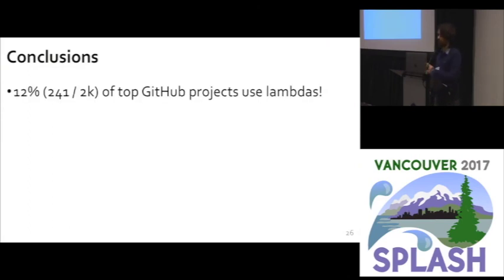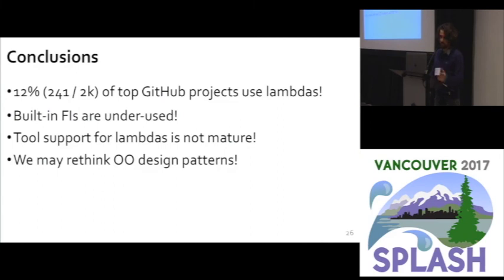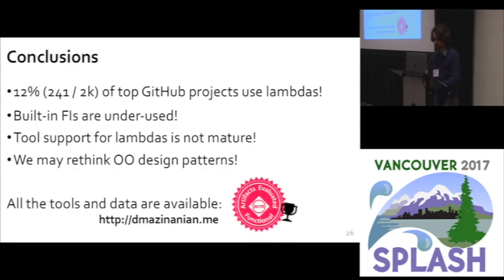To conclude, some of the more surprising findings: only 12% of the top GitHub Java projects are using lambda expressions. Built-in functional interfaces are underused. Tool support is not mature. We may need to rethink many things we've taught students, including classic design patterns. By studying how developers use lambda expressions, we may find even more interesting uses. The artifacts and data for this study have been evaluated by the Artifact Evaluation Committee — we invite you to use the tool and dataset for your own research. You can find everything on my webpage. Thank you.